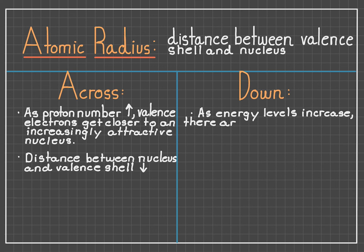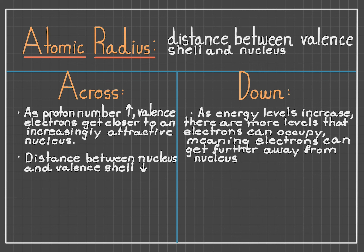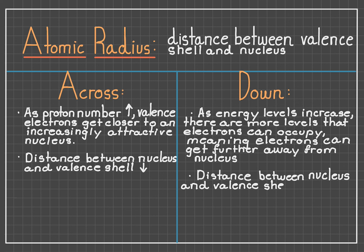As we go down the periodic table and add more energy levels to an atom, valence electrons can go a lot further from the nucleus. This means that the electrons aren't as limited in how far they can go, and so atomic radius increases because the valence electrons can go a lot further away from the nucleus.